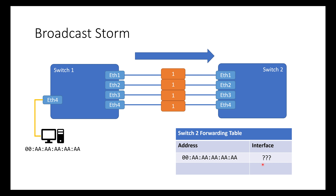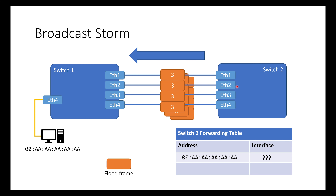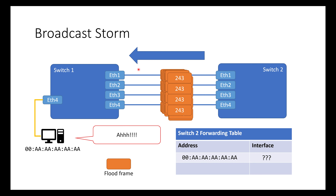Broadcast storms are even worse. A frame comes in and gets replicated four times, going down to switch two. They get replicated again — three copies per frame going back to switch one, which replicates them again. So now nine copies, then 27, 81, 243 — a broadcast storm. We're filling up the network, overwhelming interfaces, probably dropping frames because all this is happening at near line rate. Hosts on the network get overwhelmed evaluating flood frames that aren't relevant to them.